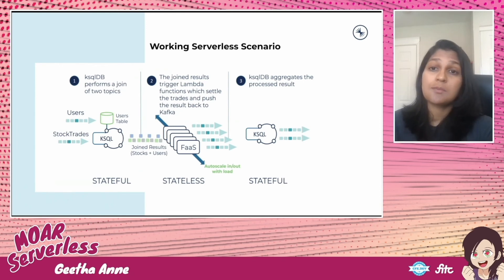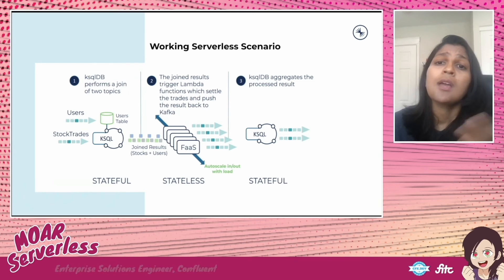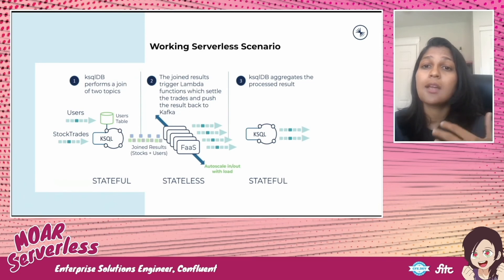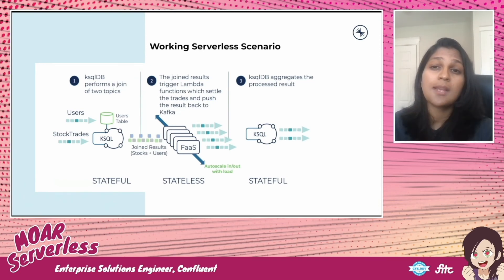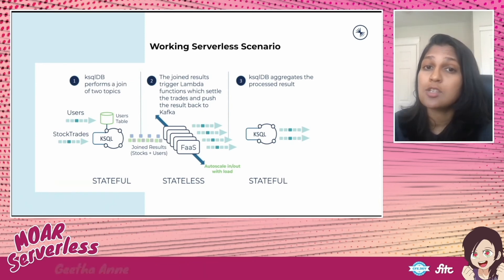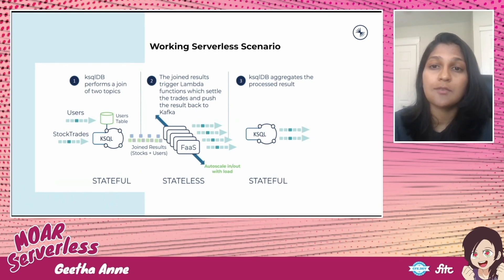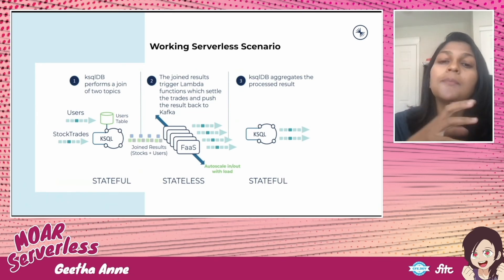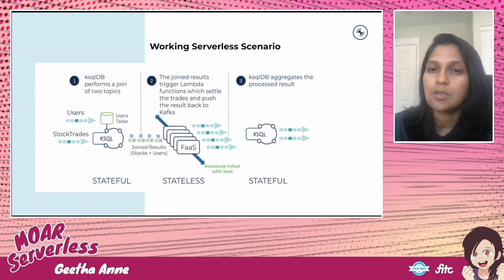This is where the stateful feature of ksqlDB comes into play. ksqlDB has RocksDB, which persists records to local disk. By using an embedded local store, ksqlDB can maintain a running status of a stream's state by constantly updating the materialized view. ksqlDB also ensures that your state is durable through the use of changelog topics. When ksqlDB writes stateful results to RocksDB, the same record is persisted to the changelog topic as well. In the case of a failure or local storage being wiped out, you can restore the state of the event and rebuild RocksDB from the changelog topic — this is how ksqlDB achieves its fault-tolerance guarantees.